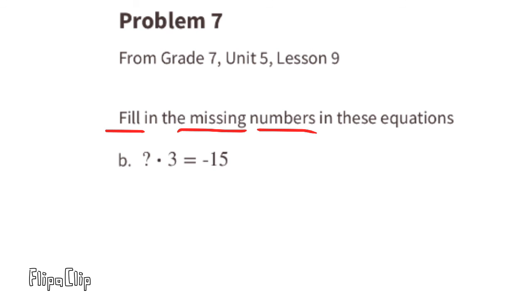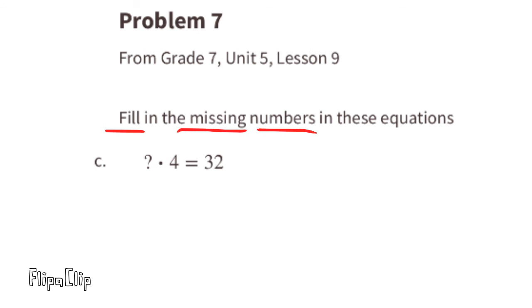Part B: what number times 3 equals negative 15? A negative times a positive equals a negative, and 5 times 3 equals 15. So negative 5 times positive 3 equals negative 15. Part C: what number times 4 equals 32? That's a positive times a positive since both the answer and 4 are positive.